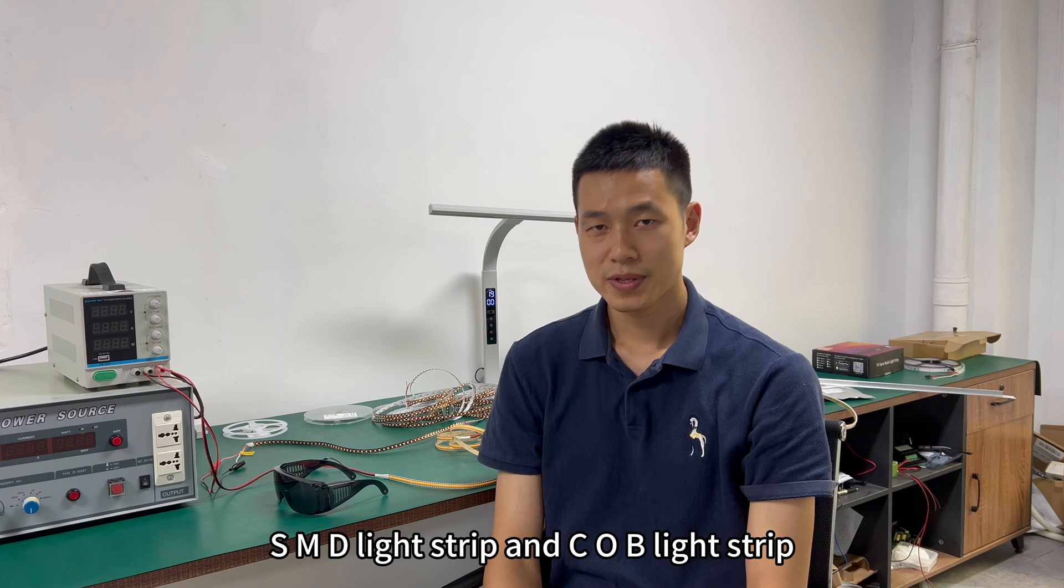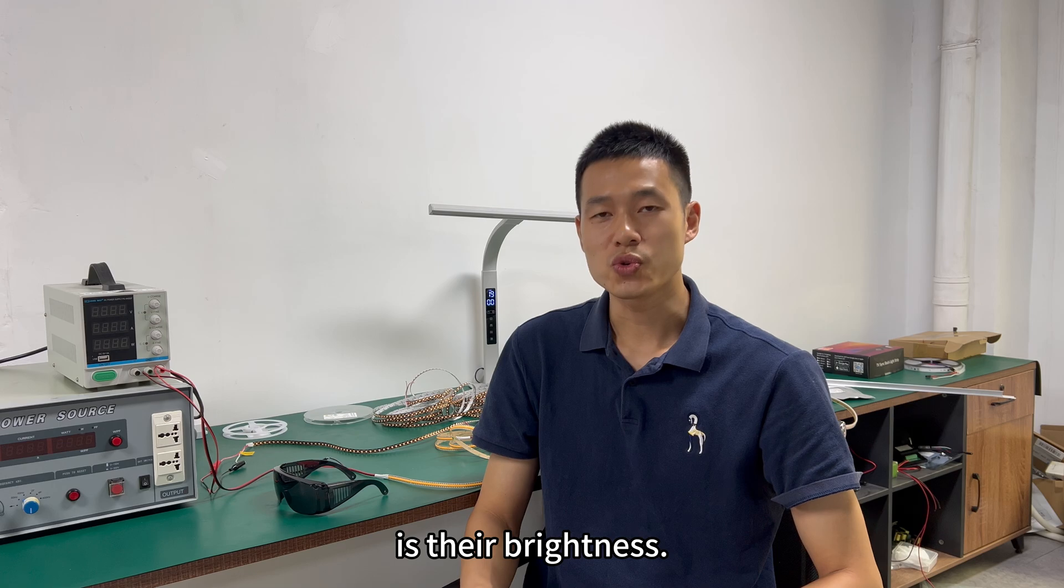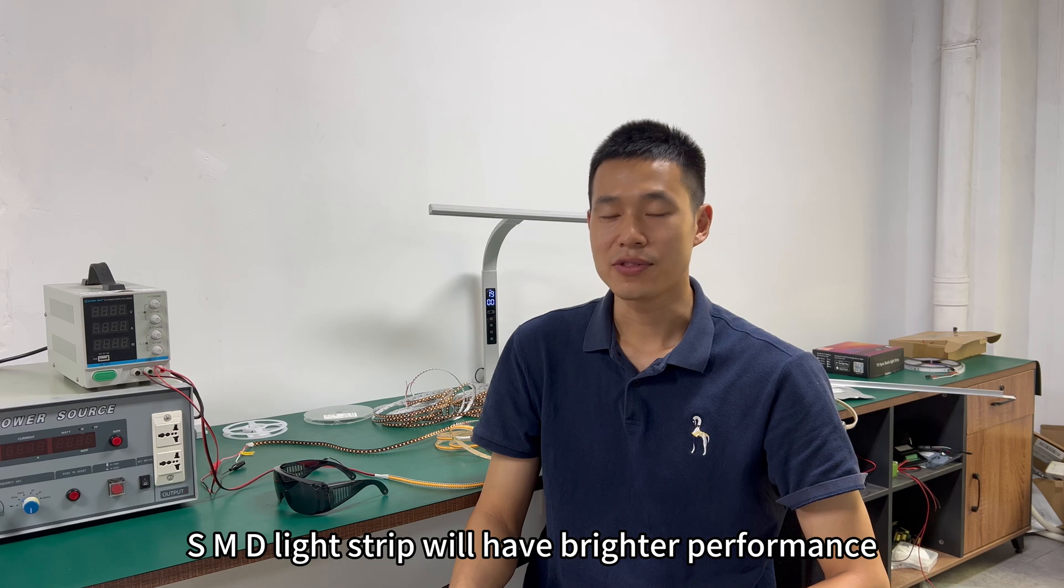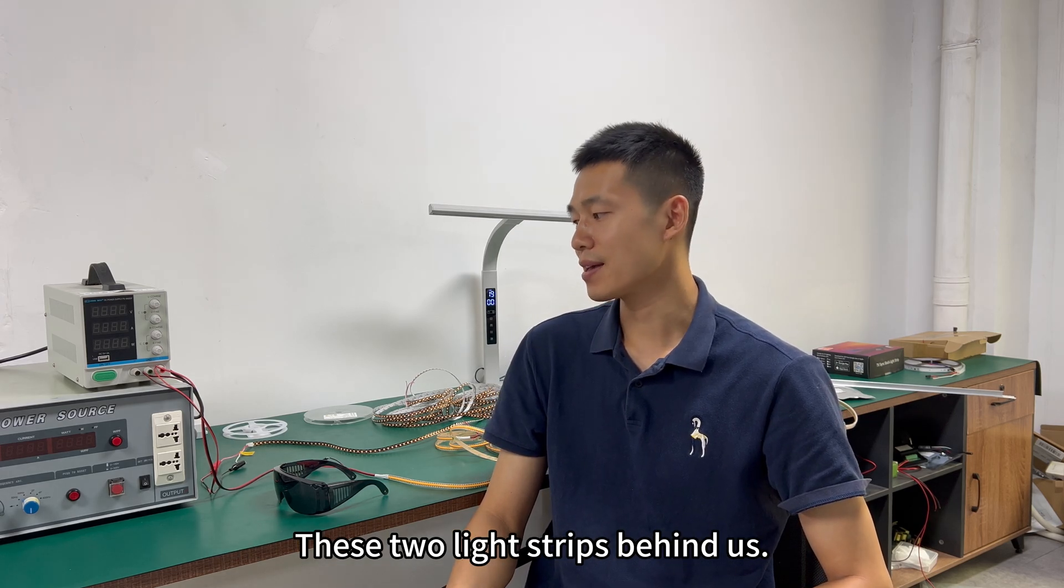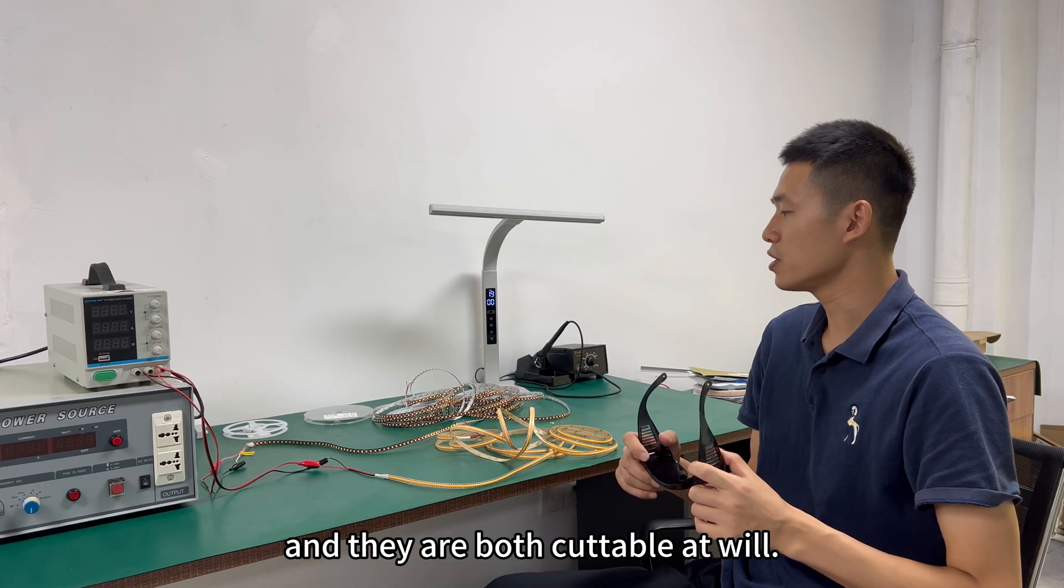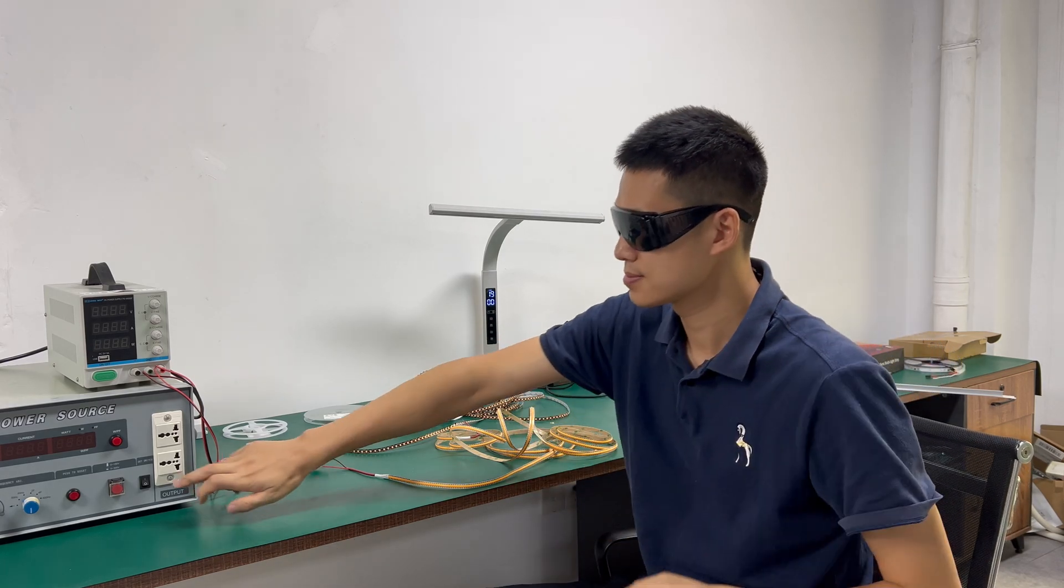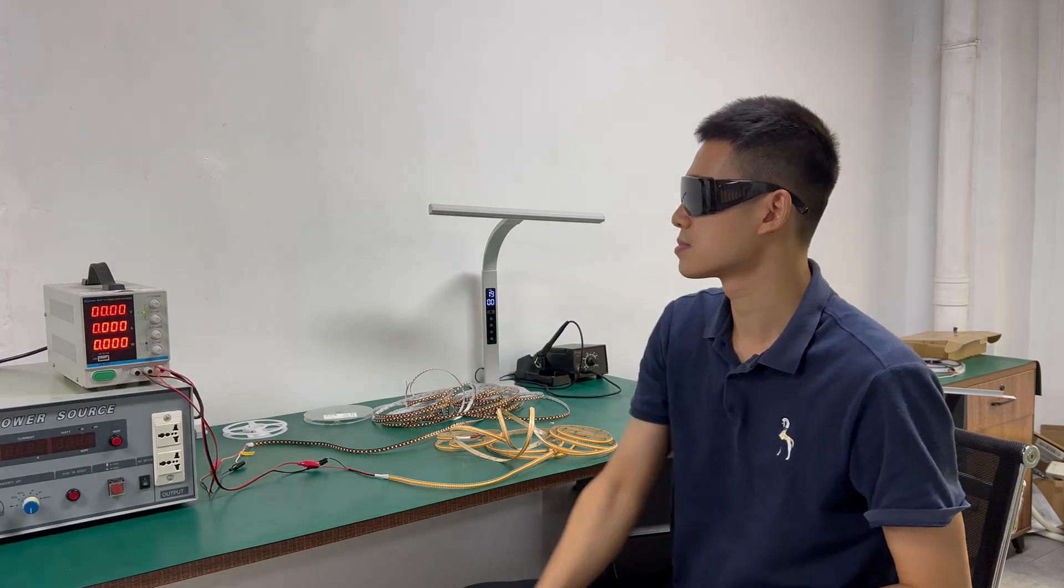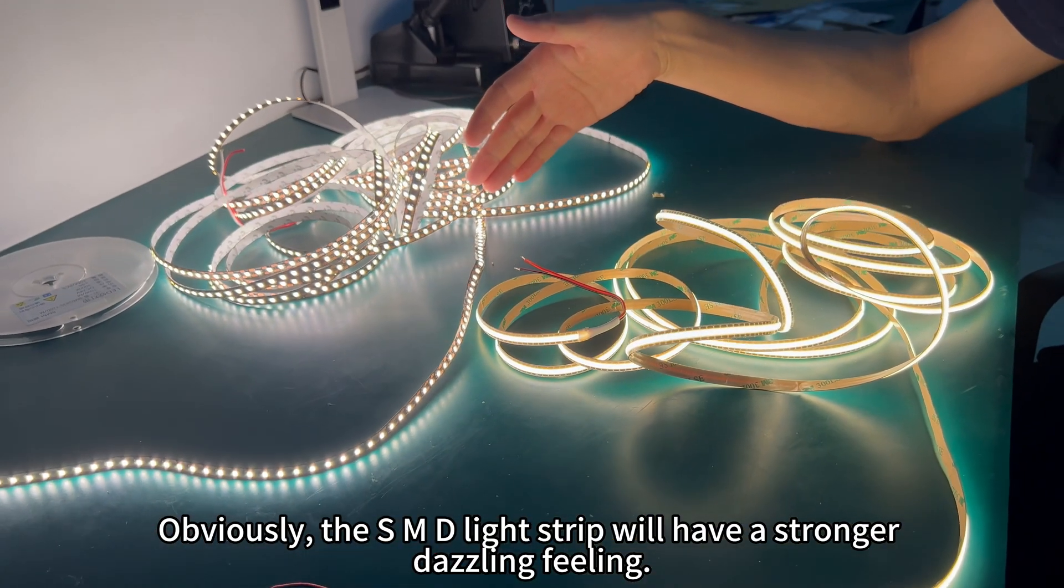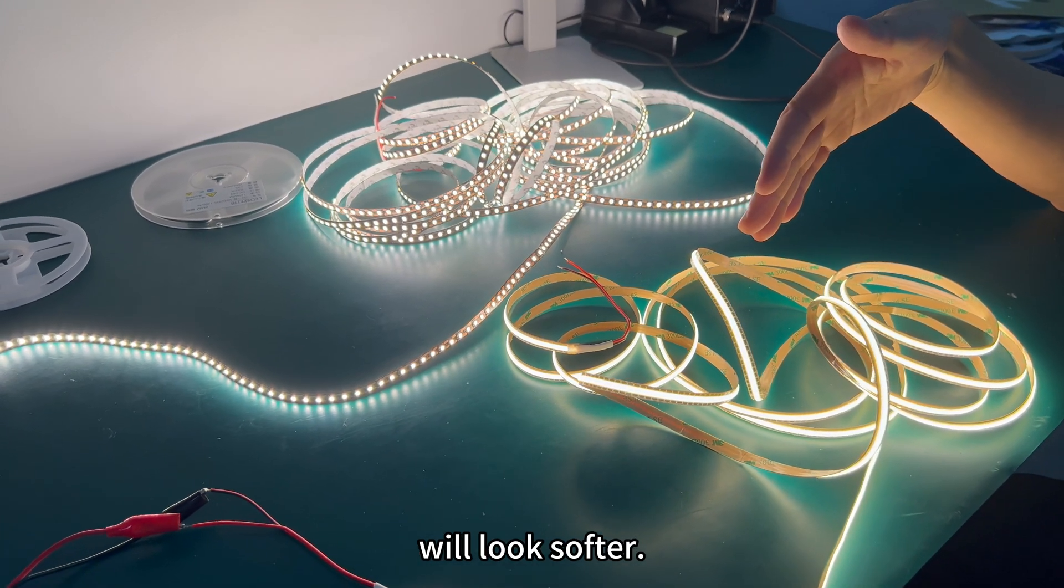SMD light strip and COB light strip, the third difference is their brightness. Under the same wattage, SMD light strip will have brighter performance. Now let's take a look at these two light strips behind us. They all have 10 watts of wattage, and they are both cuttable at will. Now let's turn them on and see which one is brighter. We can see that, obviously, the SMD light strip will have a stronger dazzling feeling, while COB strip light will look softer.